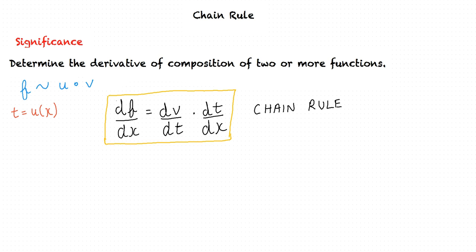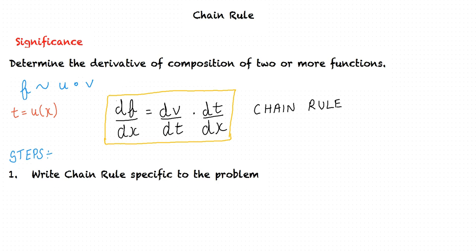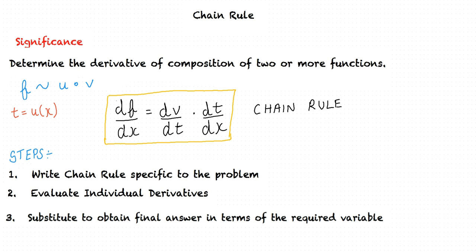In order to evaluate a derivative using the chain rule, we follow these steps. First, we write the chain rule formula specific to the problem. The above formula applies when the function f(x) is composed of two functions; the formula would be different if the function is composed of three functions. The next step is to evaluate the individual derivatives. Finally, we substitute so that we obtain the final answer in terms of the variable given in the problem.